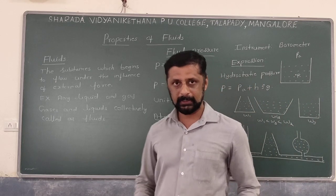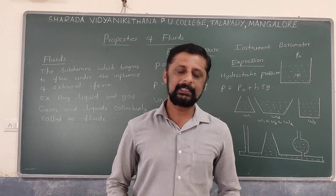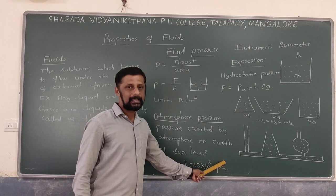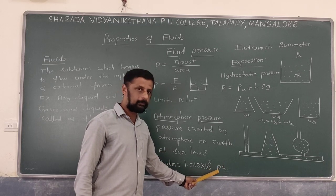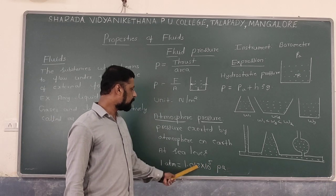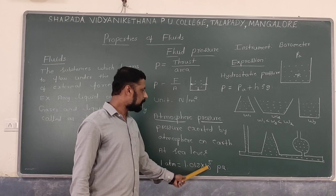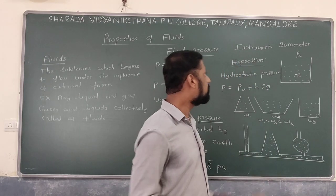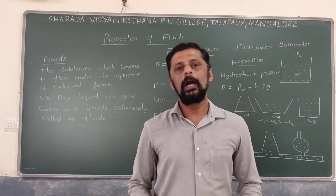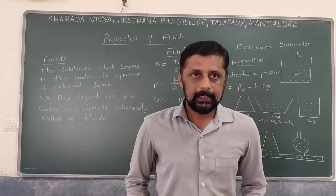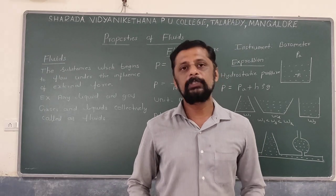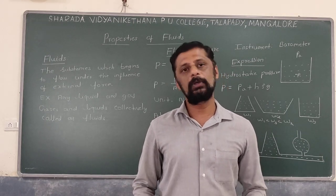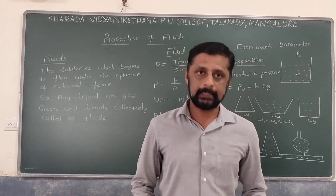The atmospheric pressure value is different at different places. At standard sea level, its value is 1.013 × 10⁵ Pascal. Another SI unit of pressure is Pascal. There is an instrument called a barometer which is used to measure the atmospheric pressure. Atmospheric pressure is maximum on the surface of the earth — as we go above or below the earth's surface, its value decreases.